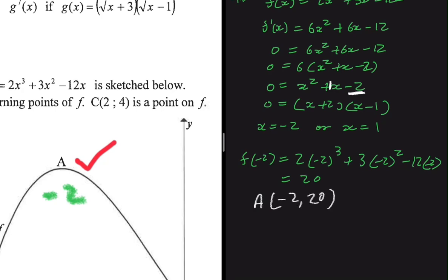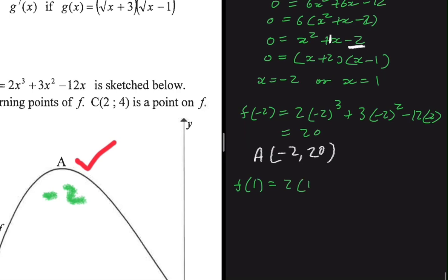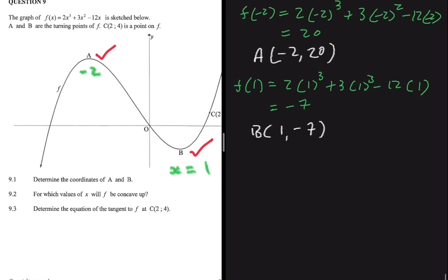Now we find f(1) to get the y-value of B: f(1) = 2(1)³ + 3(1)² − 12(1). Putting that in the calculator gives −7. So the coordinates of B are (1, −7). That's 9.1 done.